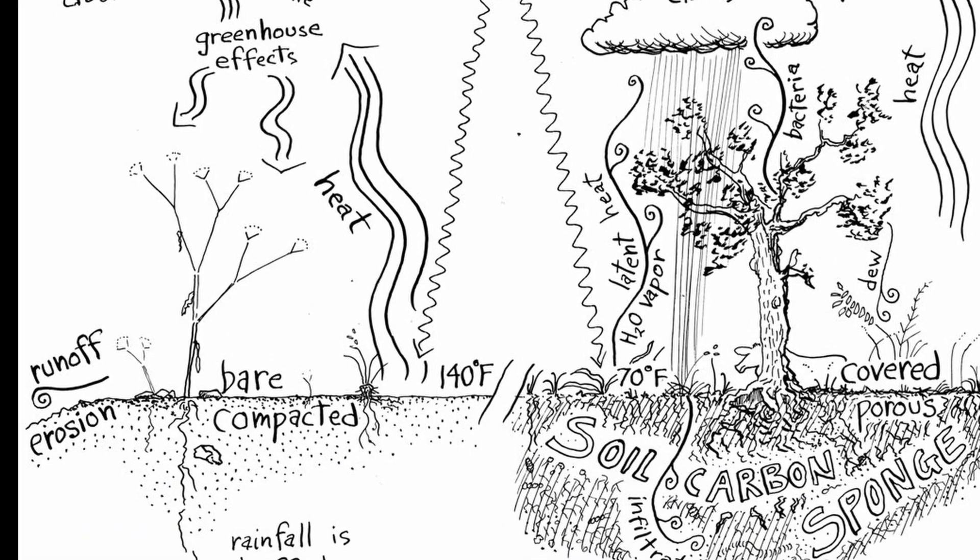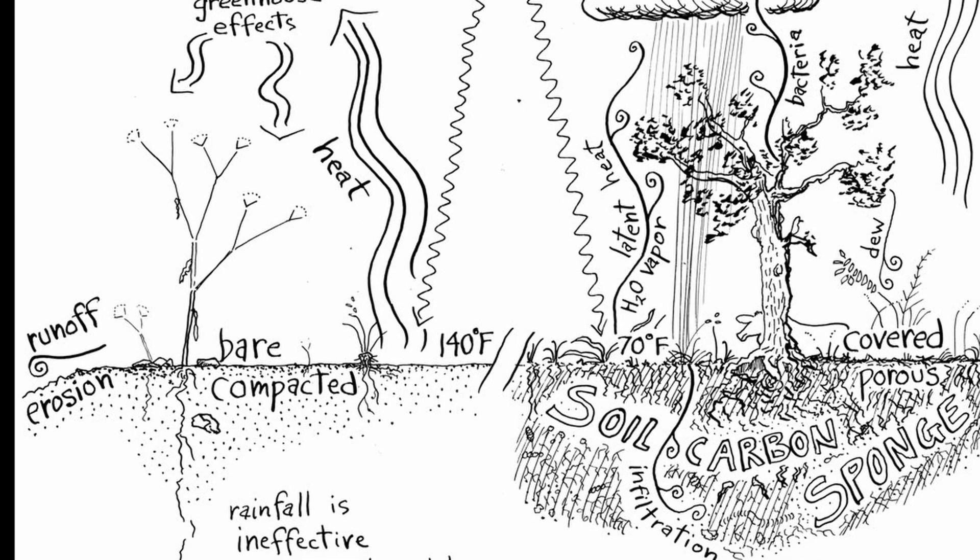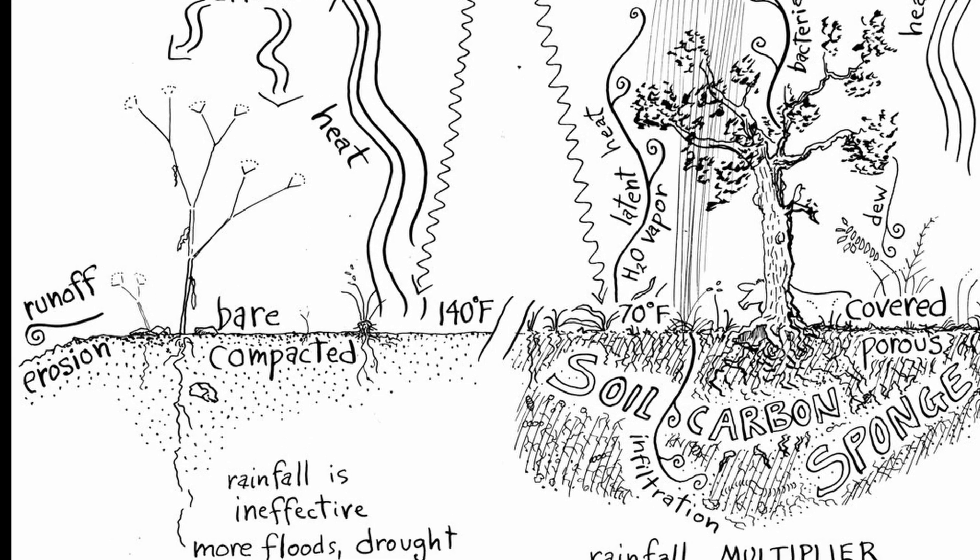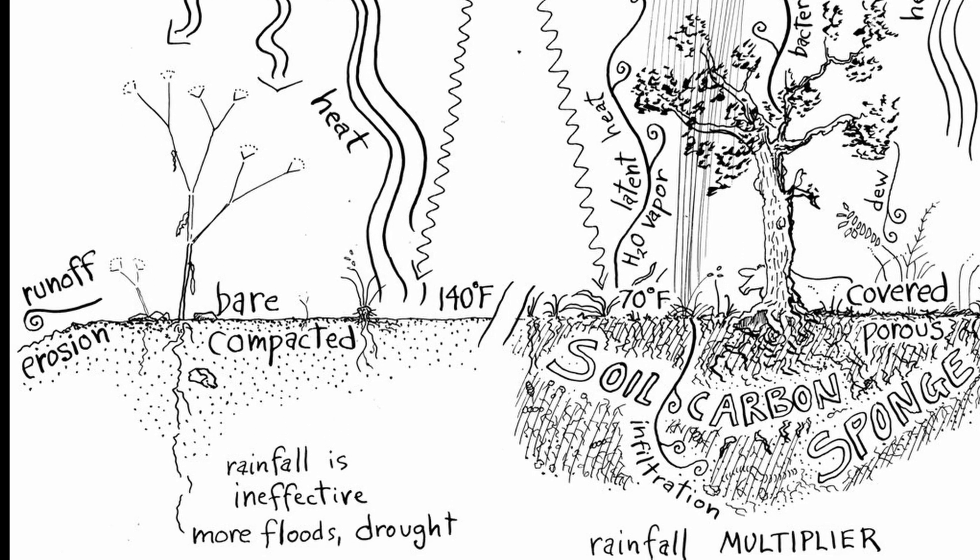Plants and soil create pressure gradients and actually attract the rain. So if our range was covered, we would actually get more rain in a more stabilized fashion.